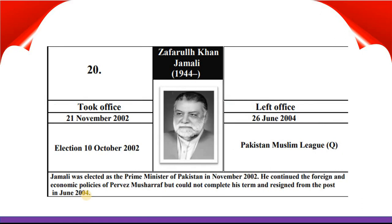Zafarullah Khan Jamali took office 21st November 2002 and left office 26th June 2004. He was elected in elections held on 10th October 2002 and belongs to Pakistan Muslim League Q. Jamali was elected as Prime Minister of Pakistan in November 2002. He continued the foreign and economic policies of Pervez Musharraf but could not complete his term and resigned in June 2004.